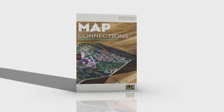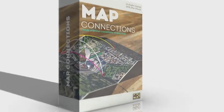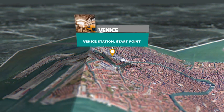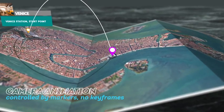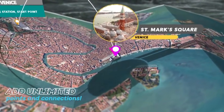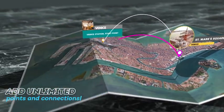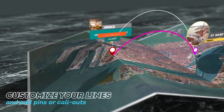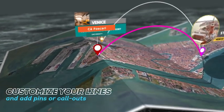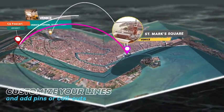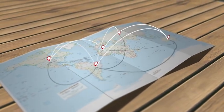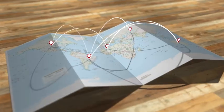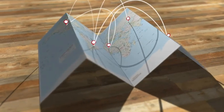Map Connections is the project you need to connect different places all over a 3D foldable map. No limitations. Just import your map image, add as many points and connections as you want, and enrich your animation with pins and callouts. The project includes several controls to customize the animation to your tastes — for example, the possibility to change the background, adjust the fold amount of the map, add depth of field, and many others.